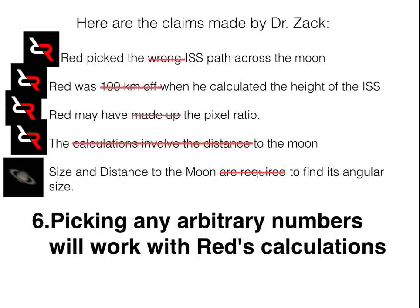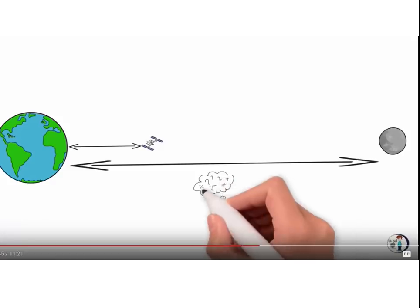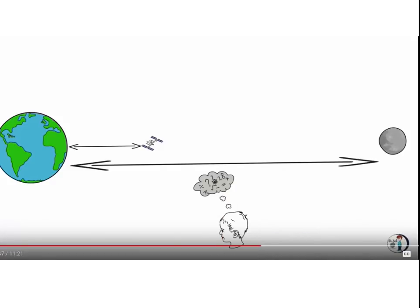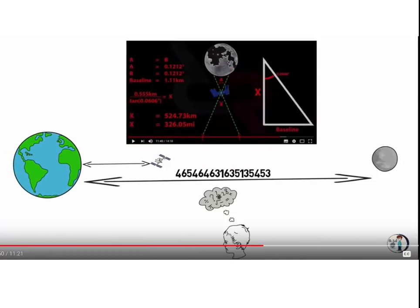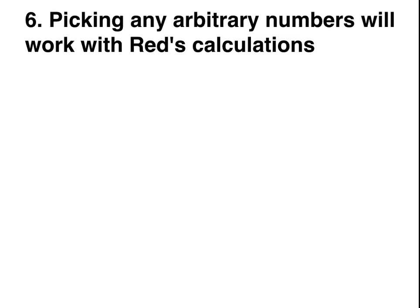Number six: picking any arbitrary numbers will work with Red's calculations. This was a central theme of your video, because you made it seem like it's just a bunch of math magic. You said: 'I will give you the distance to the moon and the distance to the ISS — I will just make up a number. Of course I actually can choose any distance to the moon and your beautiful math will match my math.' That's quite a claim — your beautiful math will match my math regardless of the distance you pick.